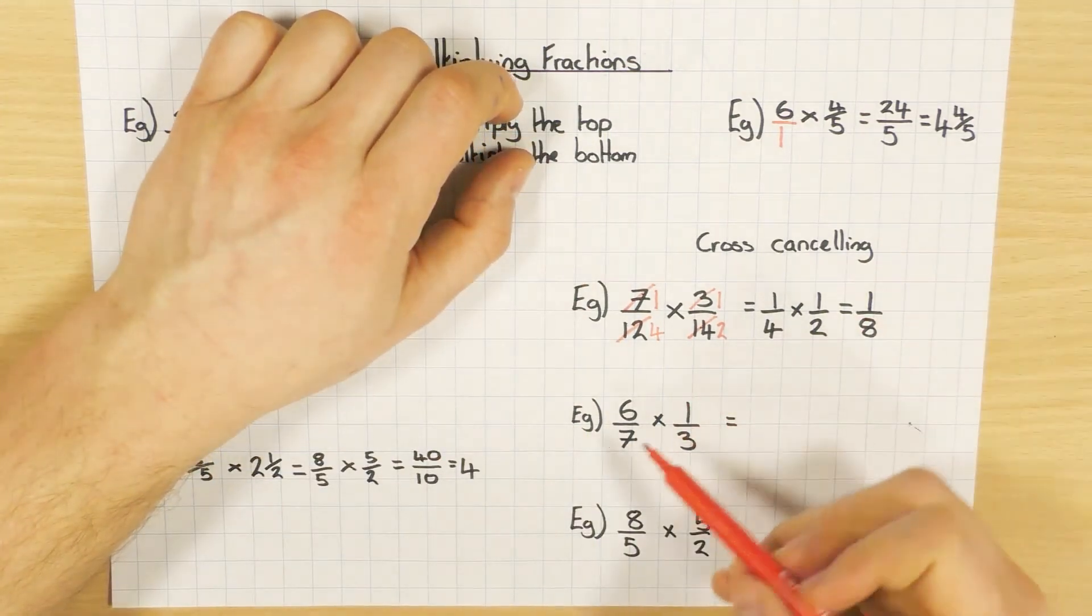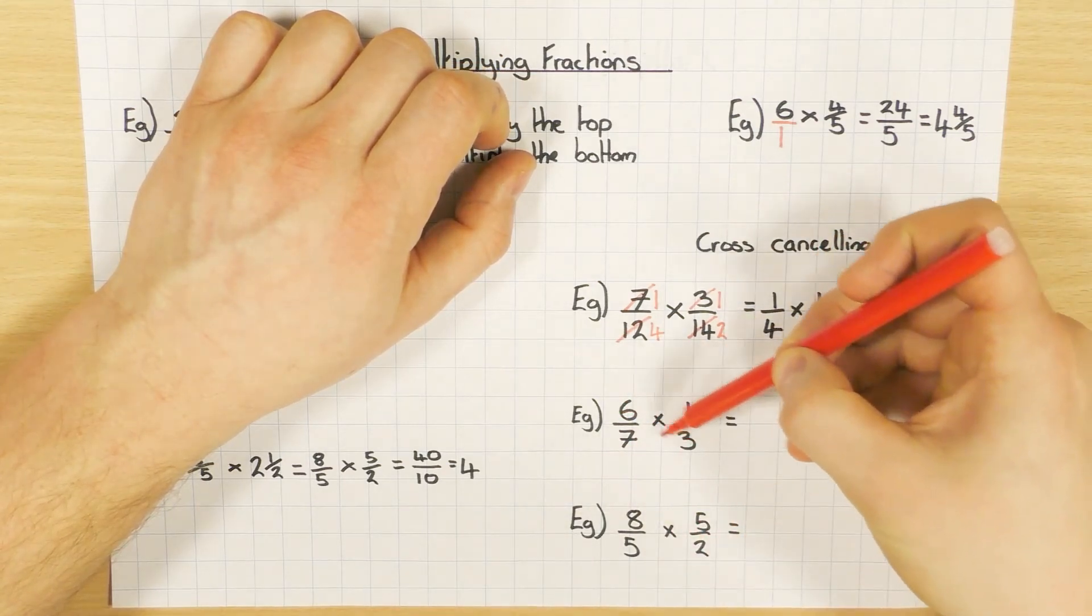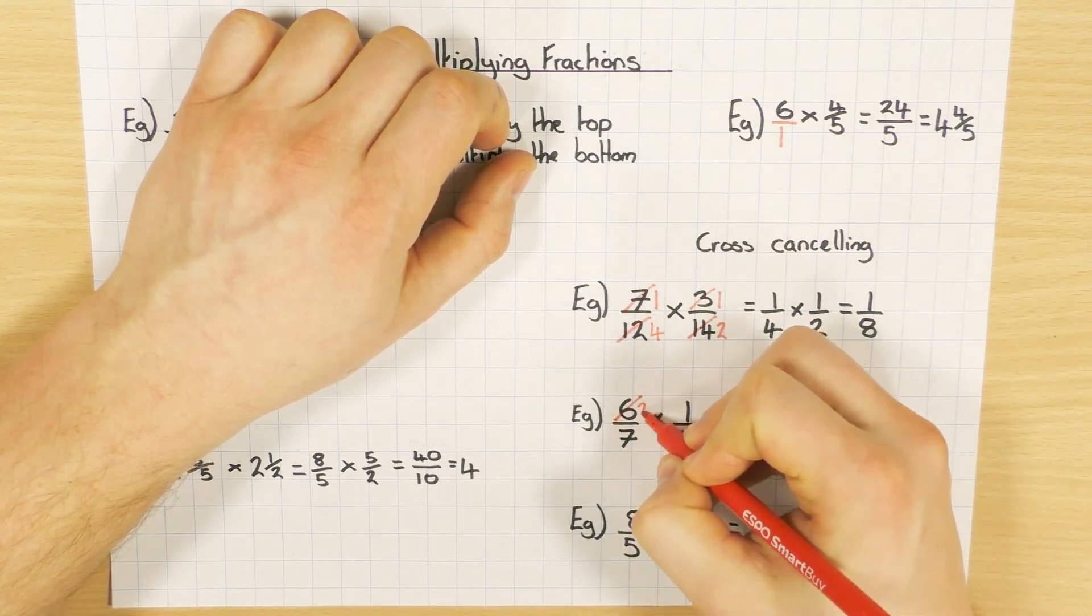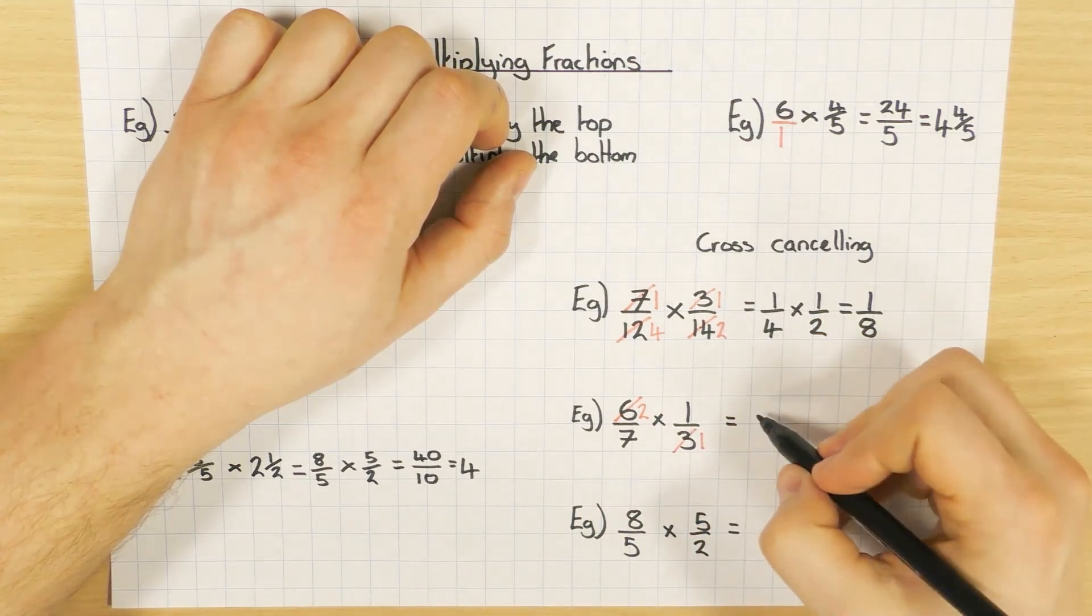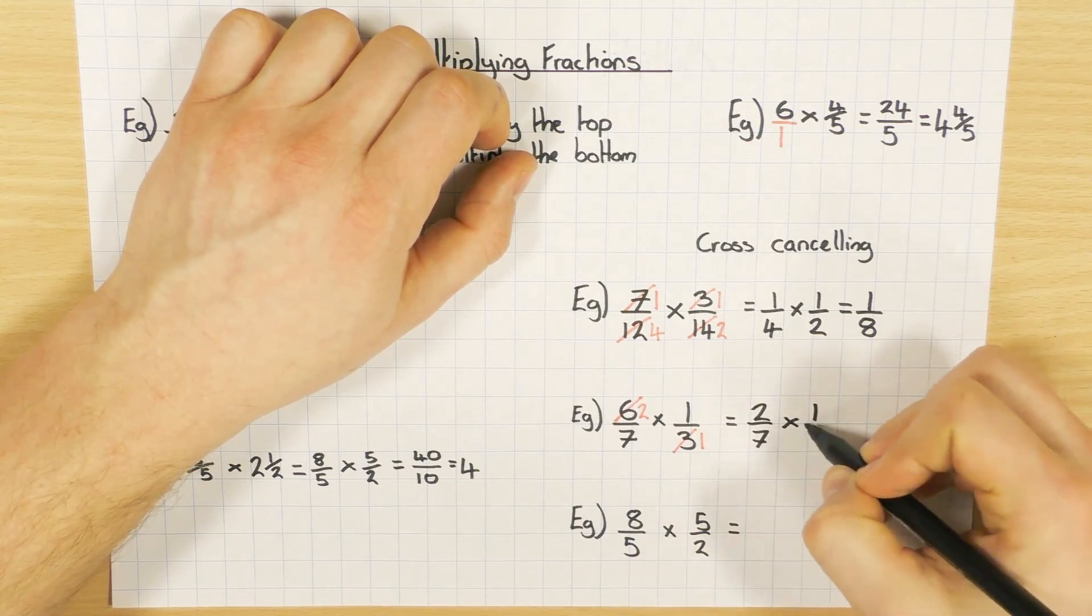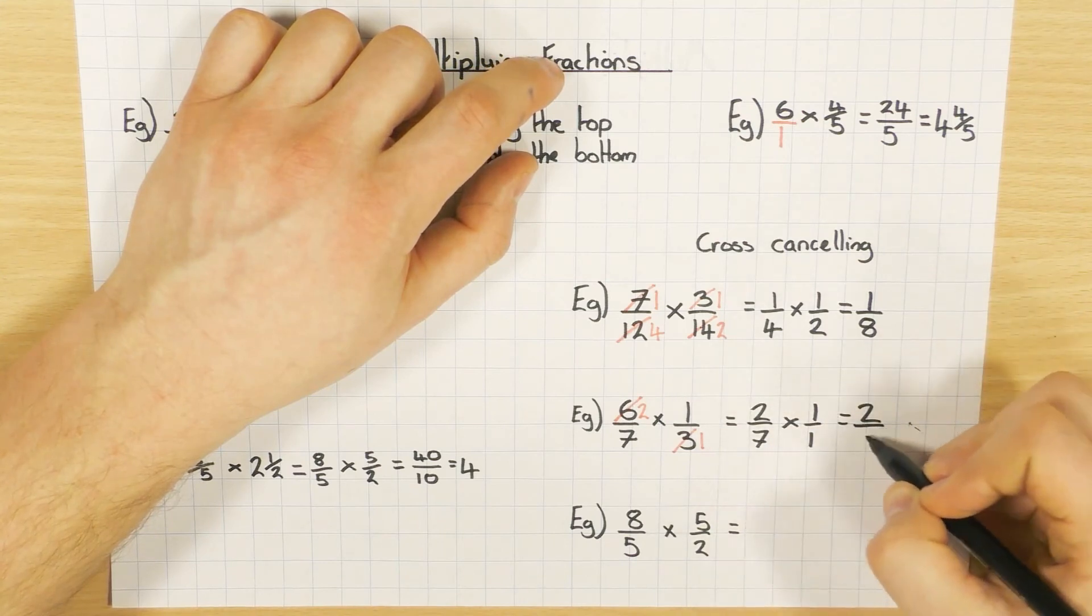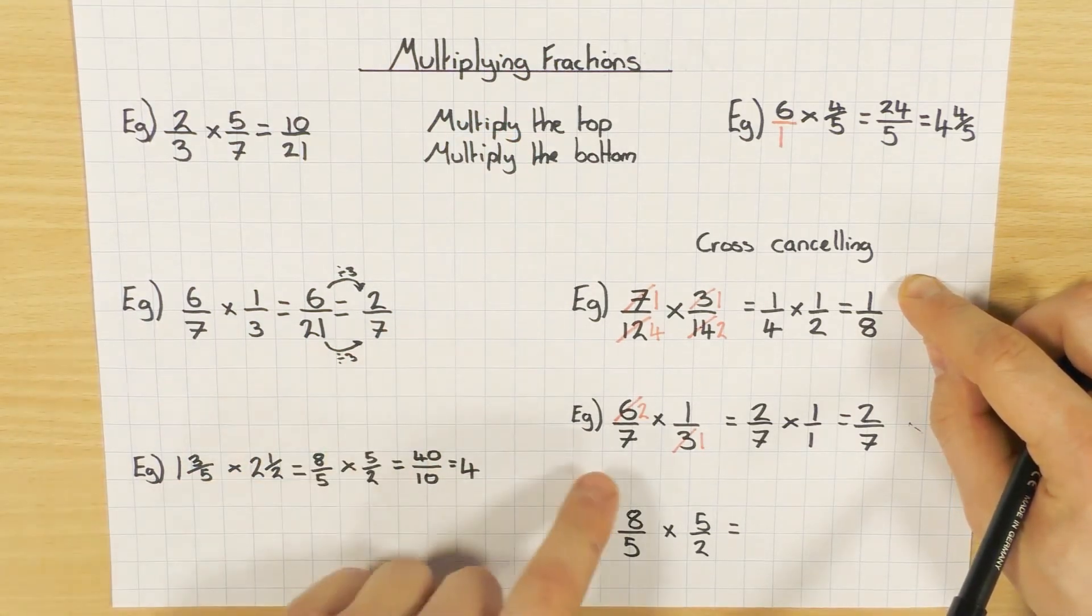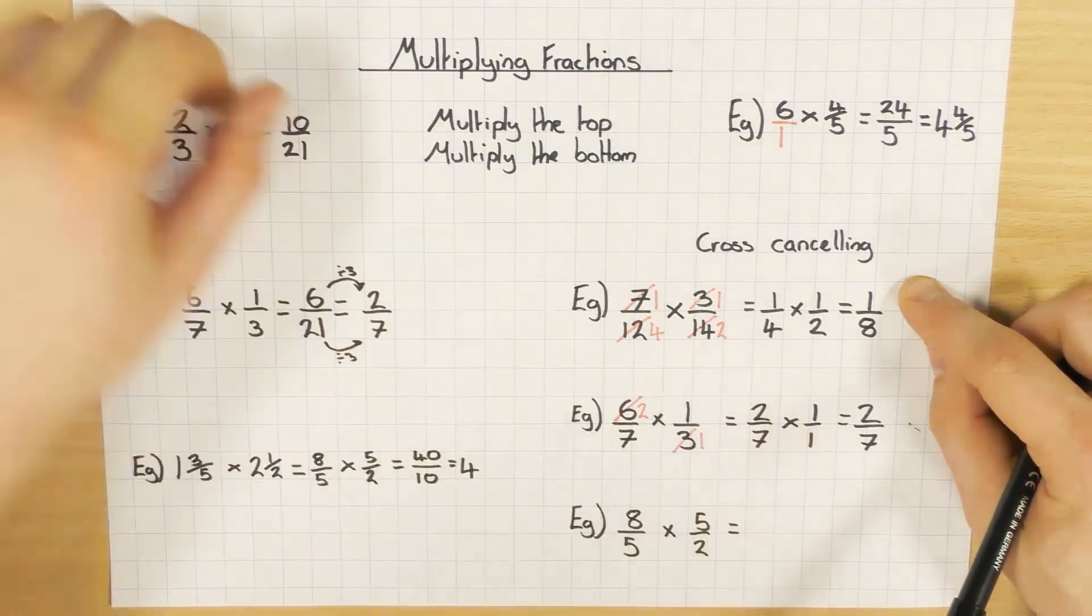We'll do another one here. So this time, 7 and 1. Well, I can't do anything with that. However, I can do something with the 6 and 3. 3 goes into both of them. So I divide the 6 by 3 to get 2, and divide the 3 by 3 to get 1. So I change my question to be 2 sevenths times 1 over 1. So 2 times 1 is 2, 7 times 1 is 7. And you might recognise that from our question over here. So instead of simplifying at the end, I've just simplified by cross-cancelling at the start, and therefore got the same answer, 2 sevenths and 2 sevenths.